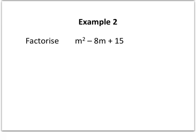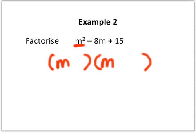We're going to do the same as before, two brackets. The m squared bit is the easy bit, because it's going to be an m in both brackets. Now what we're looking for here is two numbers that multiply to give 15 and add together to give minus 8.